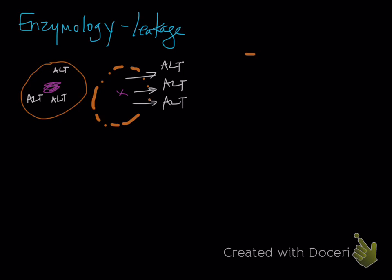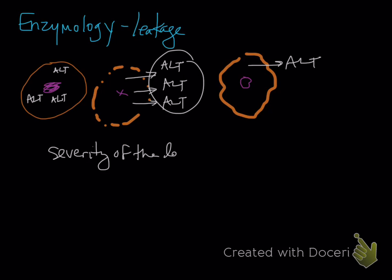You can also have just injury, and in that case you can also have ALT leak out. How much enzyme actually comes out is going to be a factor of the severity of the damage and the number of cells affected. If you have tons and tons of dying cells, you're going to have a really high increase versus a small increase with only a few cells with mild injury.